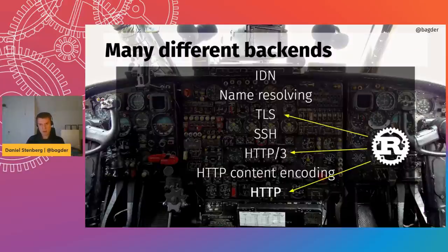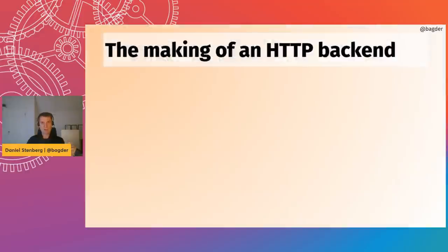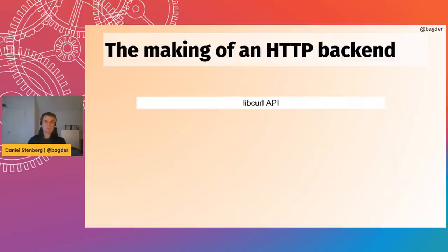We have Rust components available for three different backends: TLS, HTTP/3 and QUIC, and HTTP — which covers HTTP/1 and HTTP/2. This work is sponsored by ISRG and their Prossima project, which provides more memory-safe alternatives for different projects.